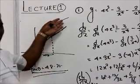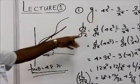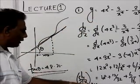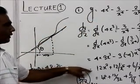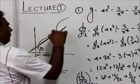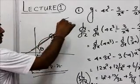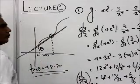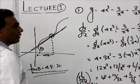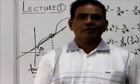So if they give you a function and ask you to find dy/dx at any point, you find the derivative and substitute that point. That gives the gradient of the tangent to the curve at that point. Okay, thank you.